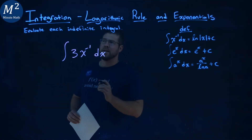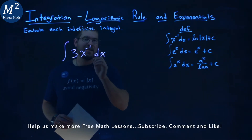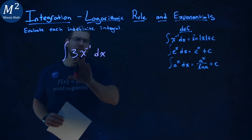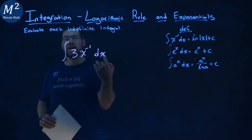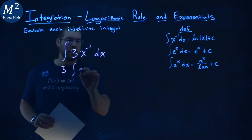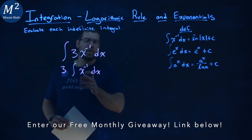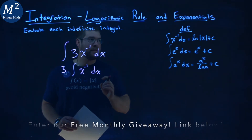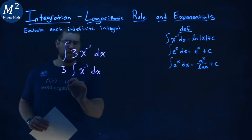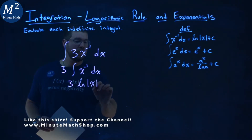We're given this problem right here. We need to evaluate this indefinite integral of 3 times x to the negative 1 power. Our definitions are going to help us here. The first thing I want to do is rewrite this — I can pull out the constant 3 and put it outside of the integral. So we have 3 times the integral of x to the negative 1 dx, and this is where we can apply our definition. The integral of x to the negative 1 power dx is equal to the natural log of the absolute value of x plus c. So we then have 3 times the natural log of the absolute value of x plus c.